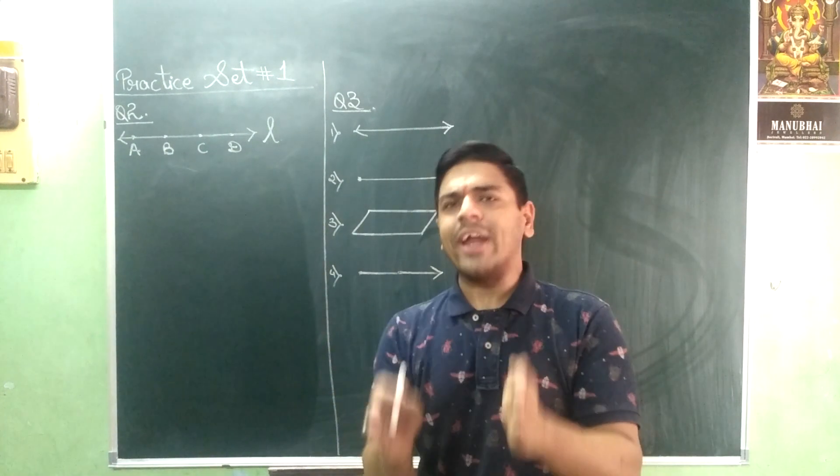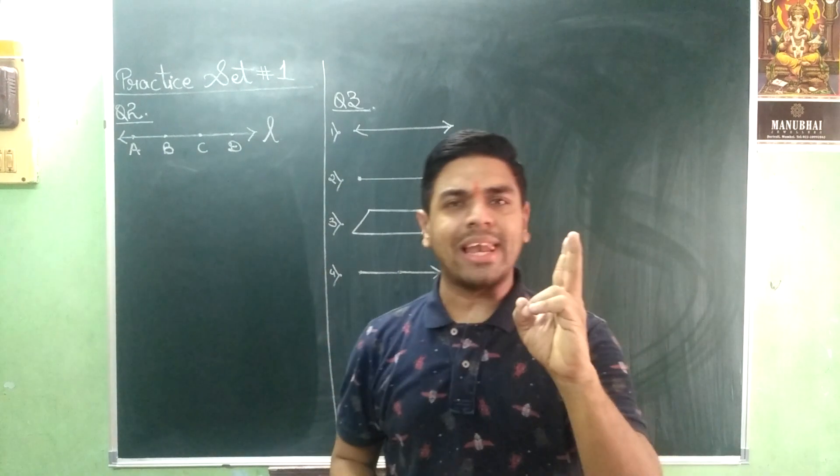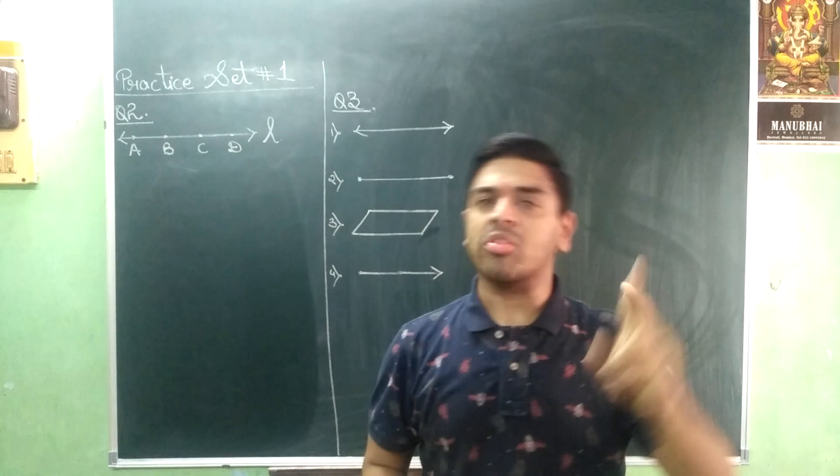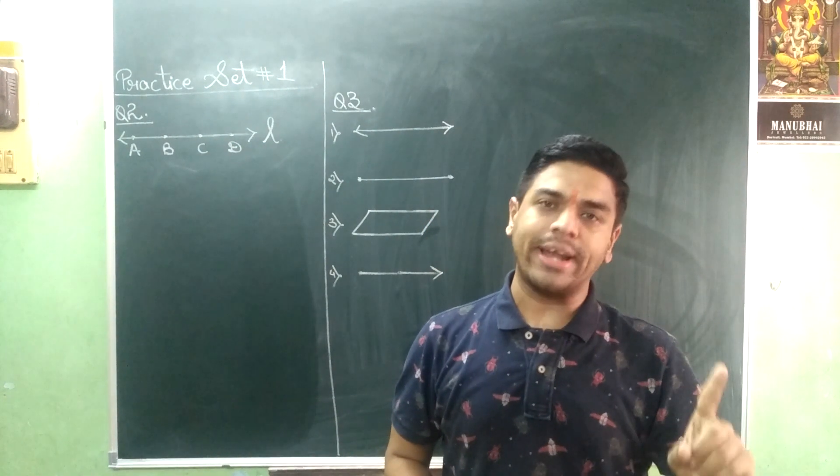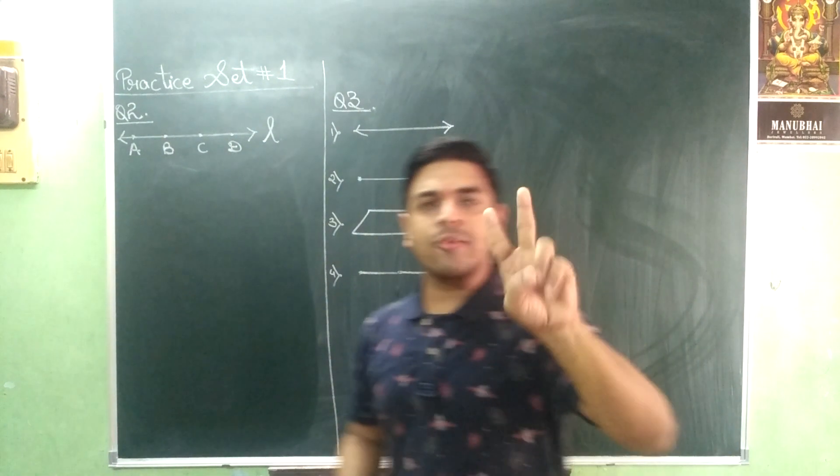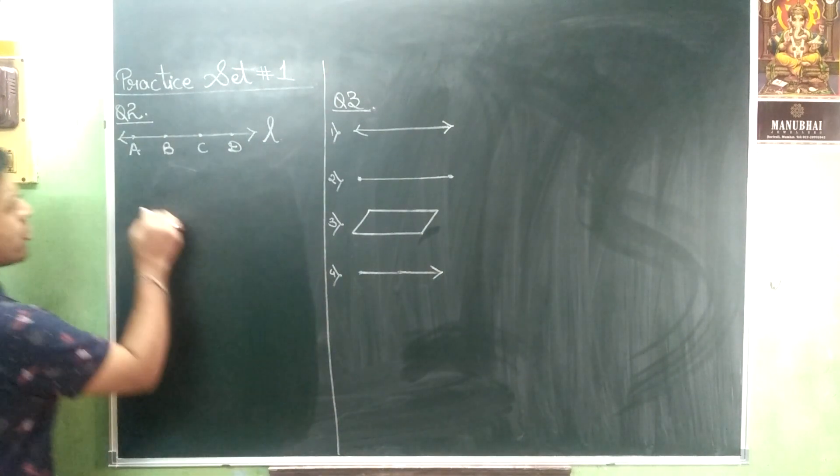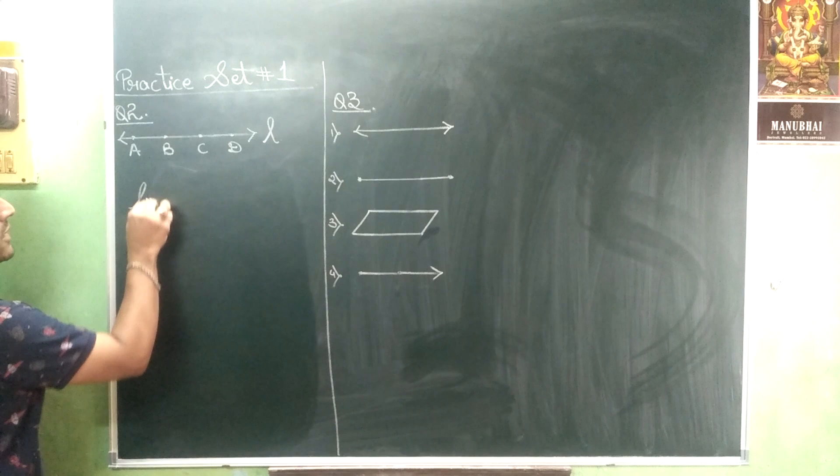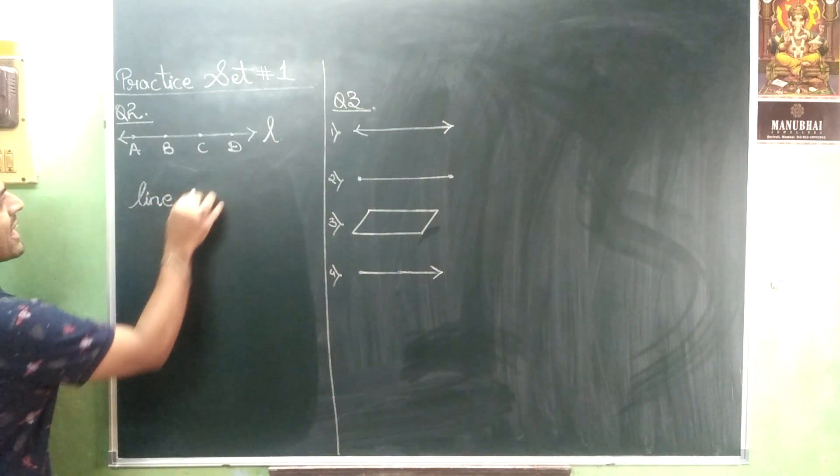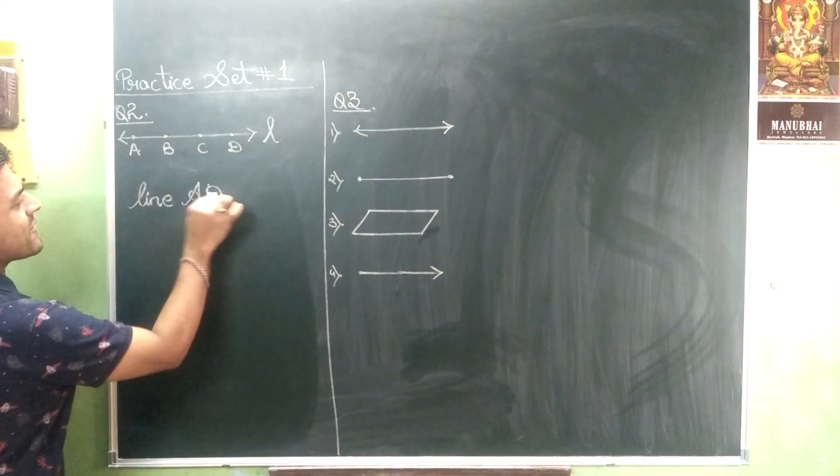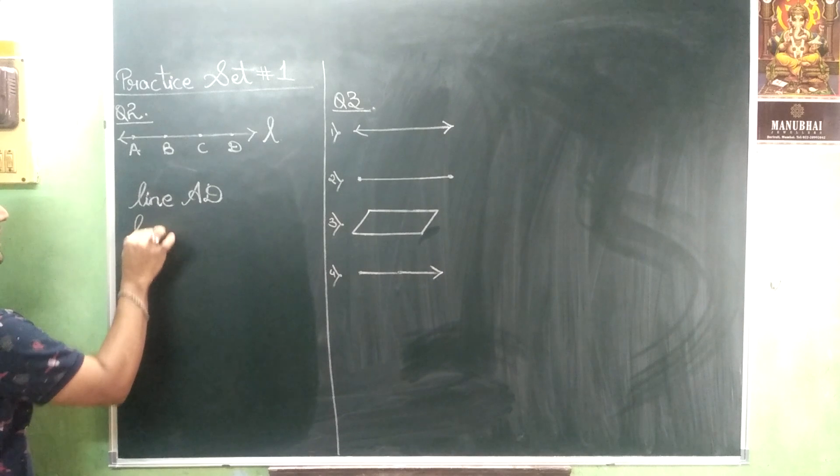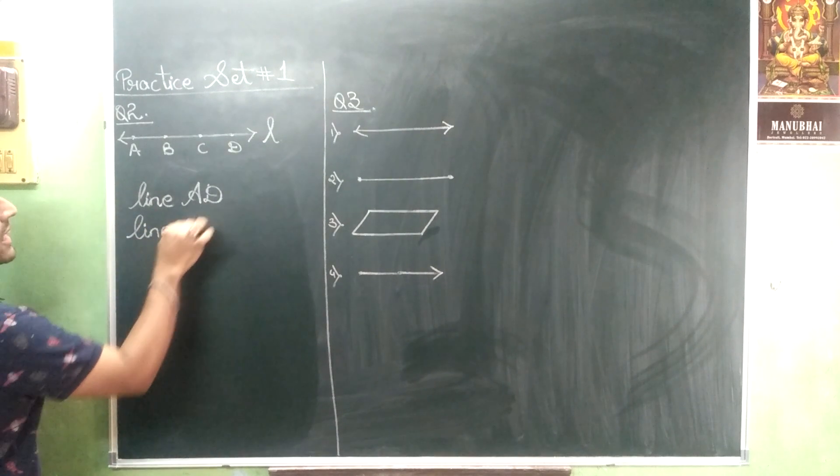You should just know when you are using two capital letters and when you are using one small letter. So the two different ways of naming this figure is as follows. First you will be writing line AD and then line L.